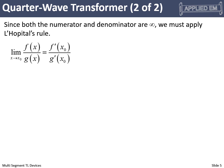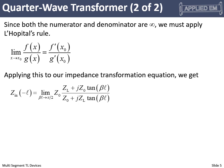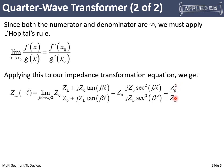Applying L'Hôpital's rule to our impedance transformation equation in the limit as beta L goes to π/2, the secant squareds cancel, the j's cancel, and the two Z-naughts multiply together. What we see is that after a quarter wavelength, our input impedance becomes Z₀² over Z_L. Our input impedance at the load was Z_L; now it's Z₀² over Z_L. So our impedance has essentially inverted.